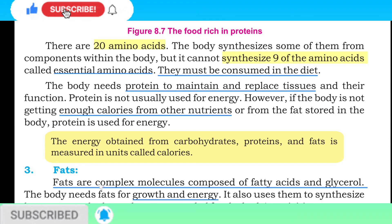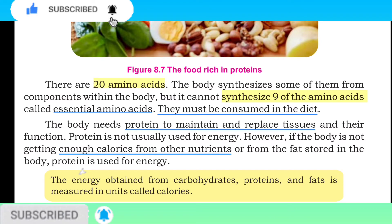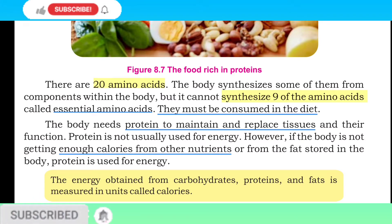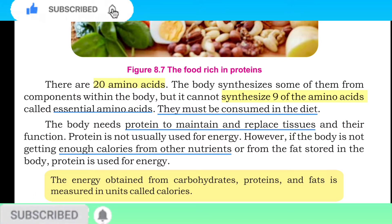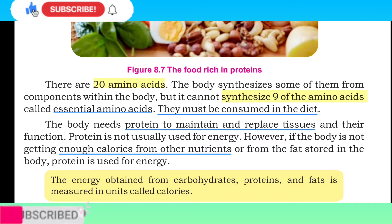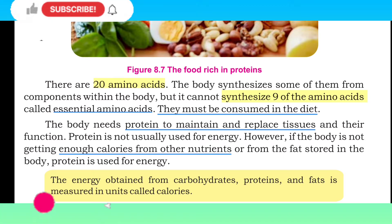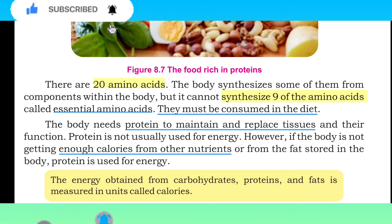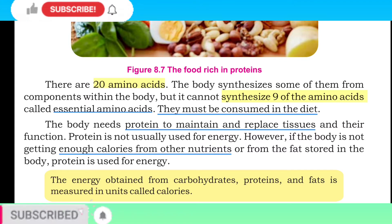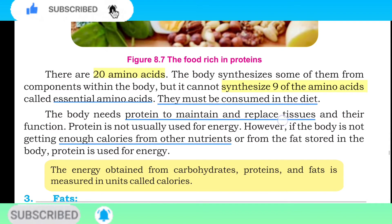There are 20 amino acids. The body synthesizes some of them from components within the body, but it cannot synthesize 9 amino acids called essential amino acids — these must be consumed in the diet. The body needs protein to maintain and replace tissues. The body does not usually use protein for energy; however, if the body is not getting enough calories from other nutrients or from stored fat, protein is used for energy.